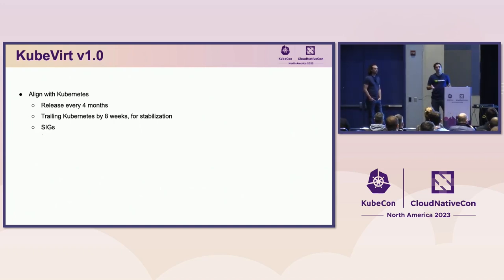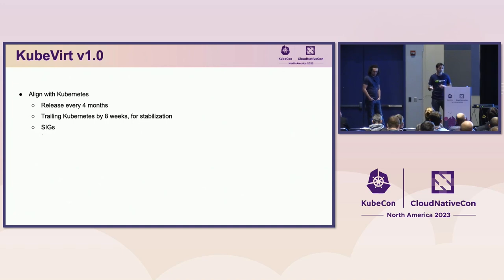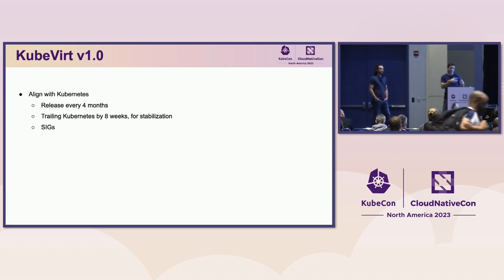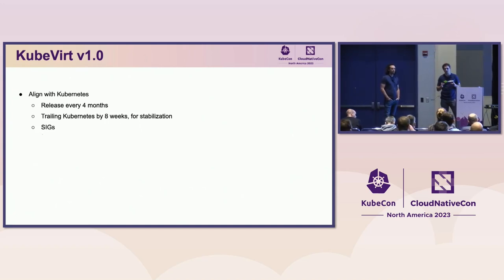KubeVirt as a project has been releasing on a monthly cadence for almost six years. This made a lot of sense for a long period of time — KubeVirt had a lot of features to develop, so there was a lot of feature velocity going into the project. A lot of these features needed to get out to end users and developers. But in the last year or so, leading up to V1, the community was really focused on trying to stabilize these APIs and slowing the feature velocity a little bit.